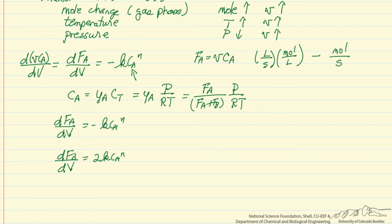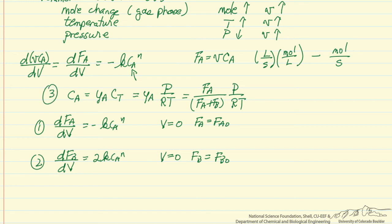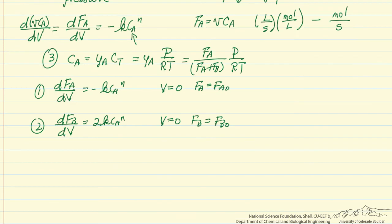These equations require initial conditions: at V equals zero, the flow rate of A is the known inlet flow rate, and at V equals zero, the flow rate of B is the known inlet flow rate of B. We then have two differential equations plus the ideal gas law equation that we solve simultaneously. In general, we would also include the change in temperature with respect to volume from an energy balance, and the change in pressure with respect to volume to allow for pressure drop through the reactor.